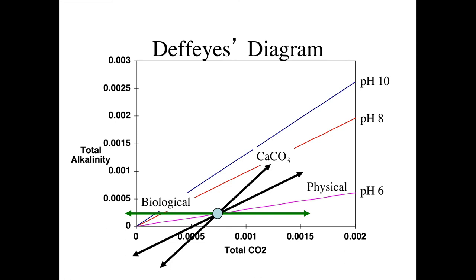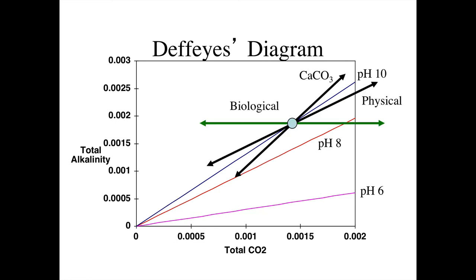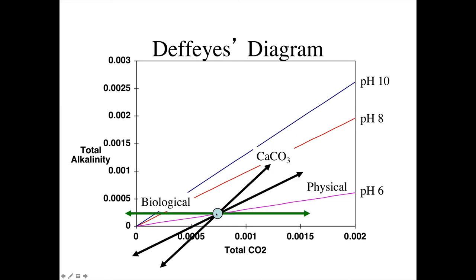So physical processes don't always result in no change in pH — it depends on the starting conditions of your system. If you start with a system of very high alkalinity, physical processes will decrease the pH; starting at lower alkalinity, physical processes would increase the pH. The same arguments apply to each of the other perturbations to the CO2 system.